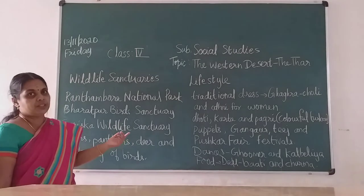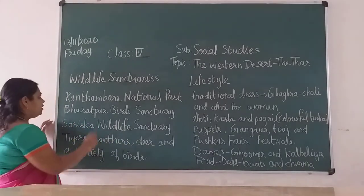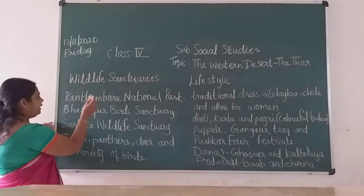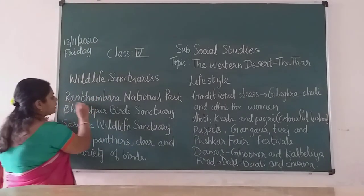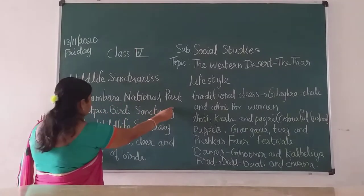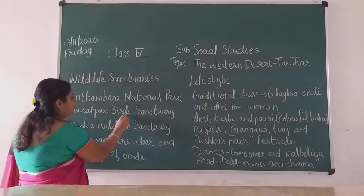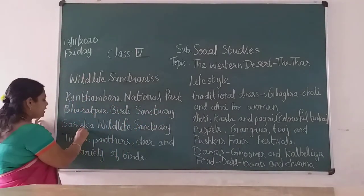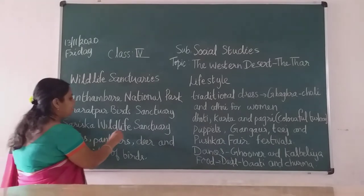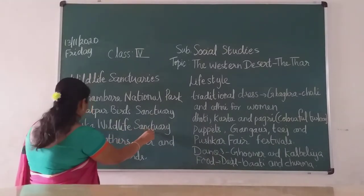These are all GK questions children, so learn them. The three wildlife sanctuaries are: Ranthambore national park, Bharatpur birds sanctuary, and Sariska wildlife sanctuary.